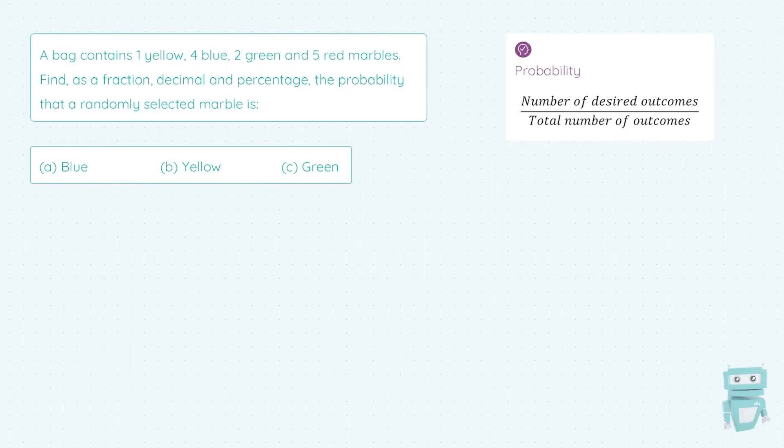Hey there, it's Stephen here with StudyClix, and in this video, we're talking about probability. Now, probability is a numerical measure of the chance of something happening.